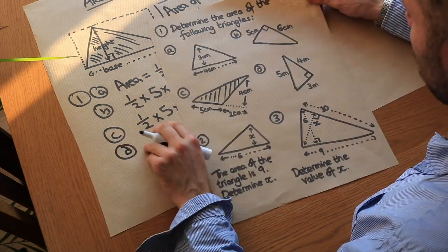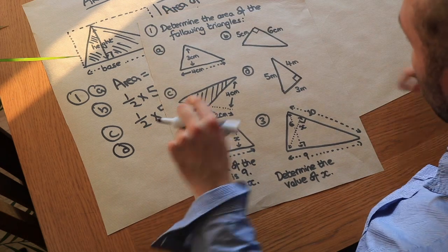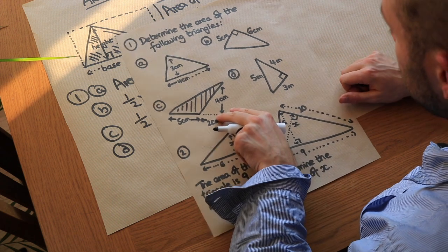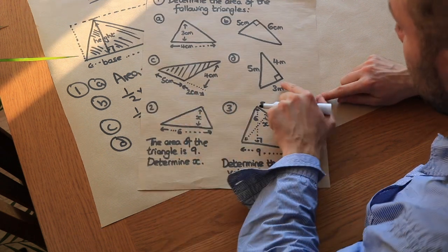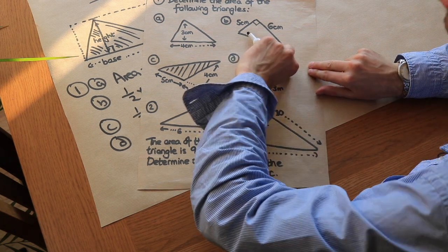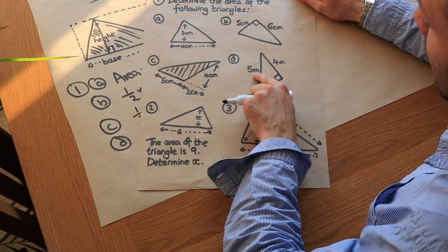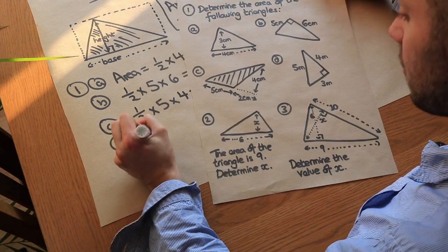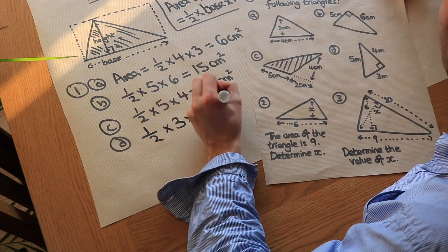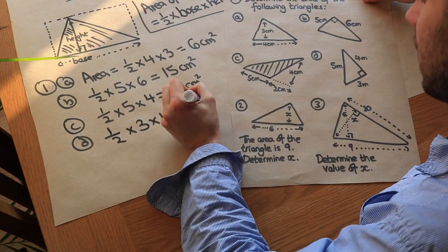What about D? There's an extra length there that we might not be using. We just need to identify the base and the perpendicular height. If we make the 3 the base, then the perpendicular height is 4. We don't use the length of 5. So it's half times 3 times 4, which is 6 metres squared.